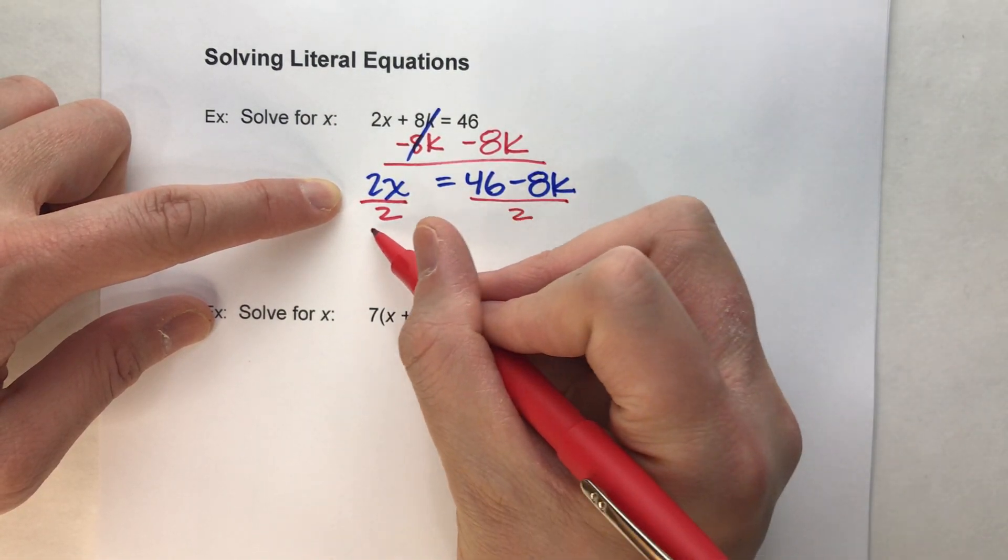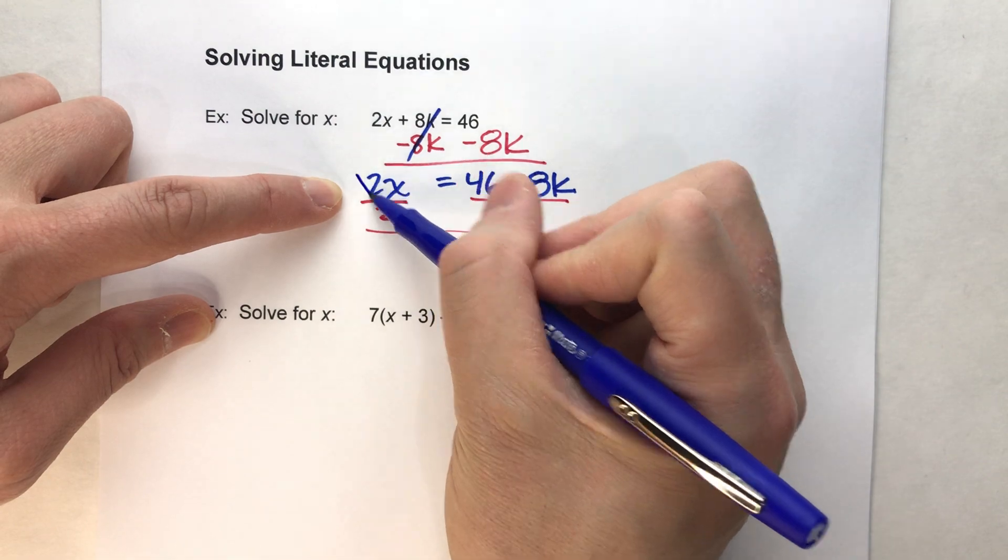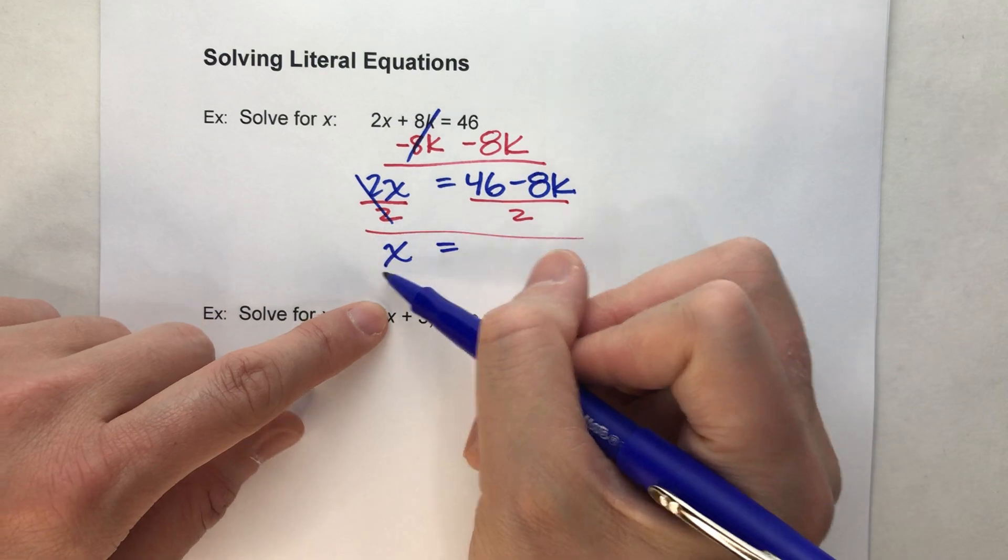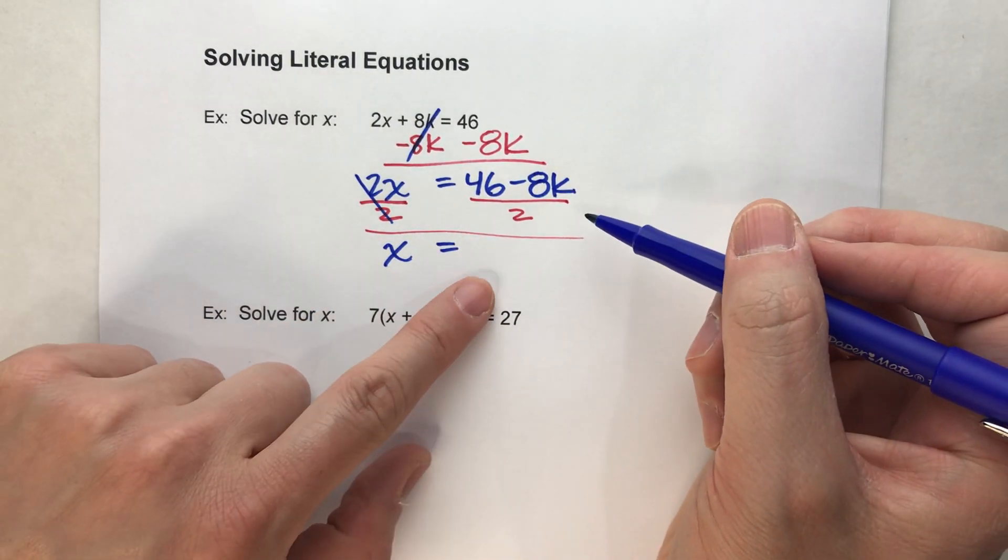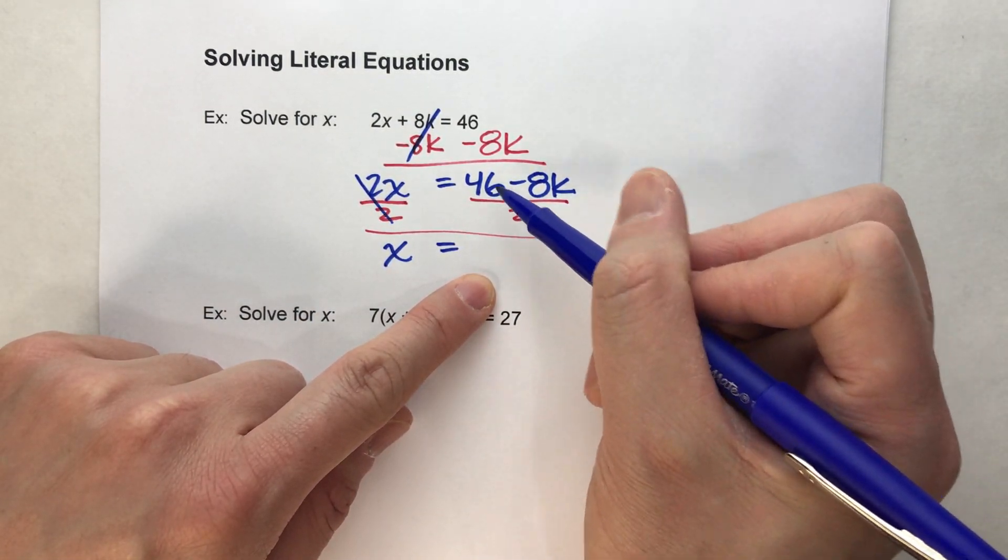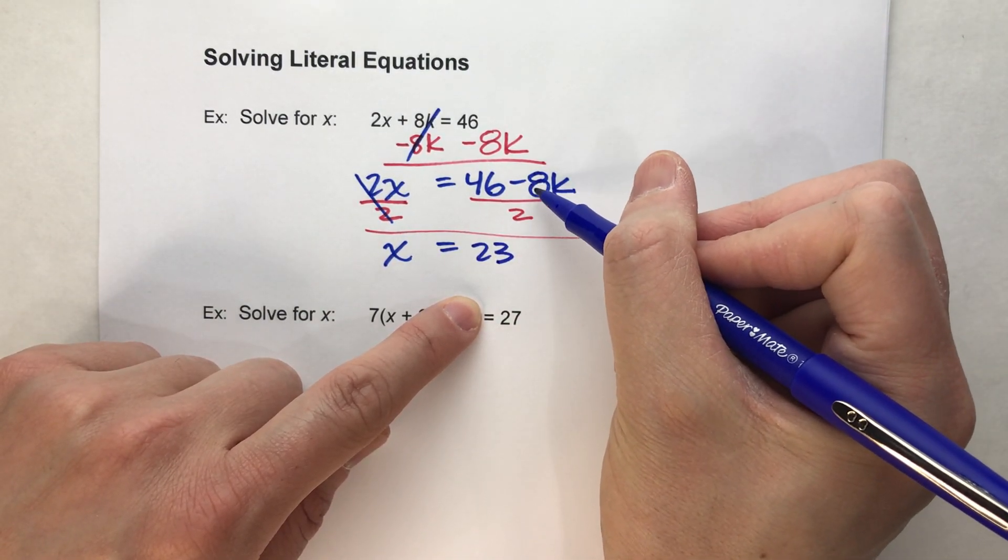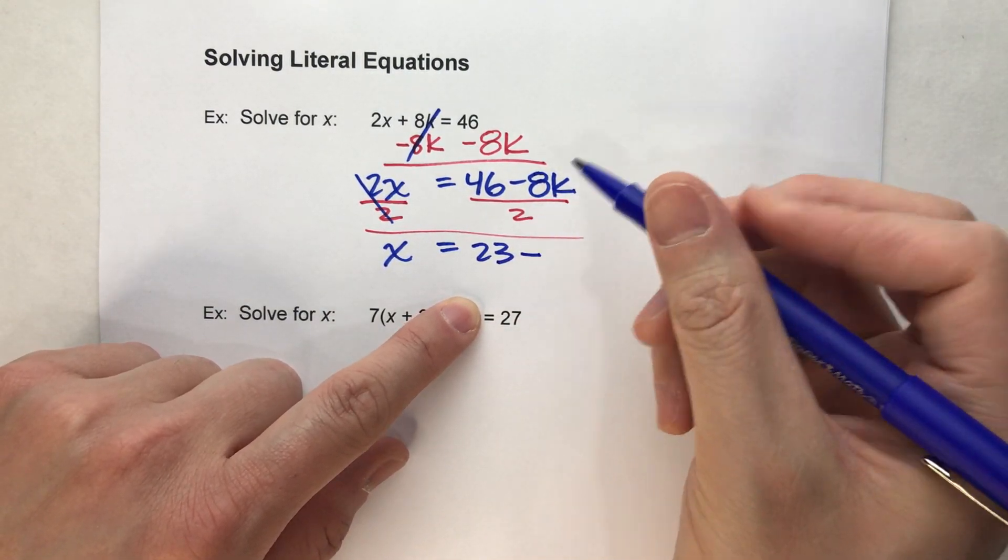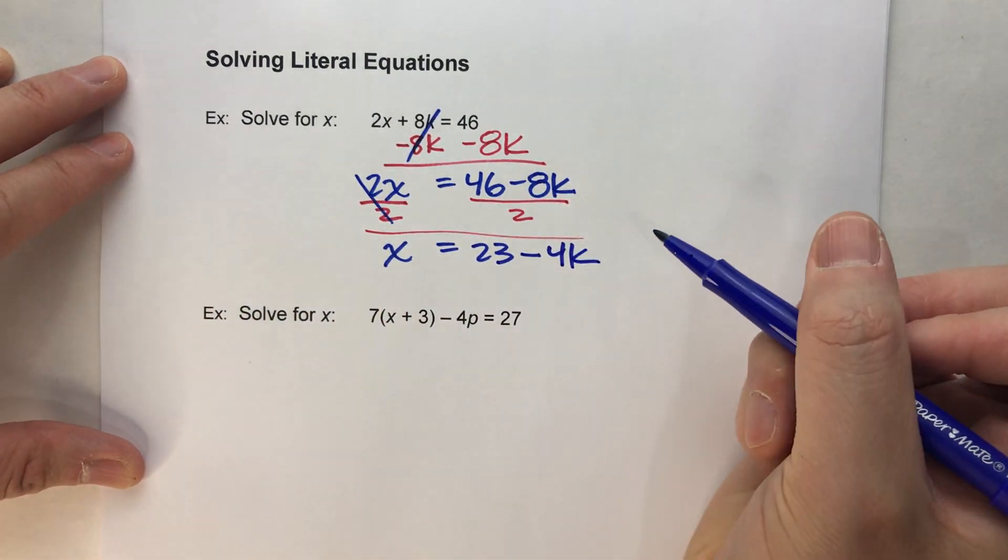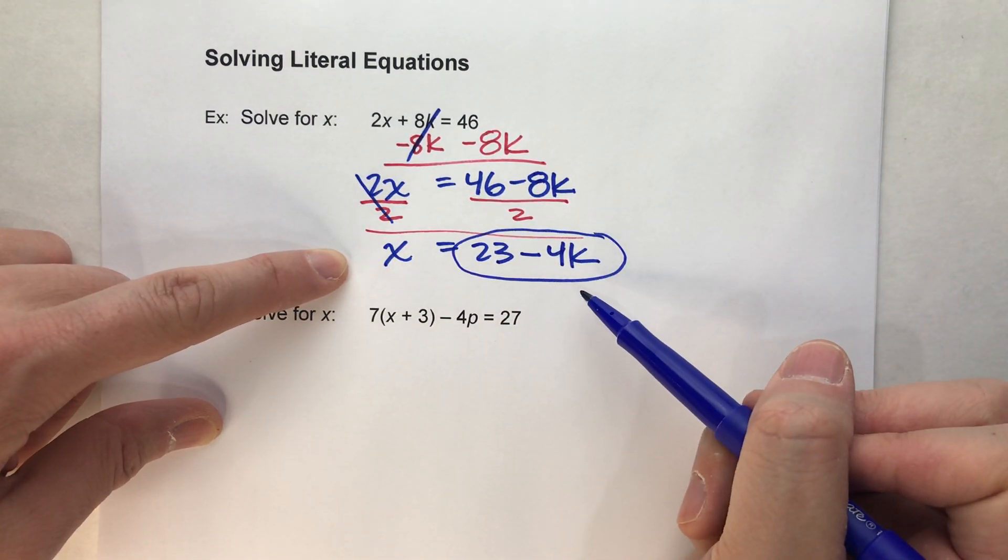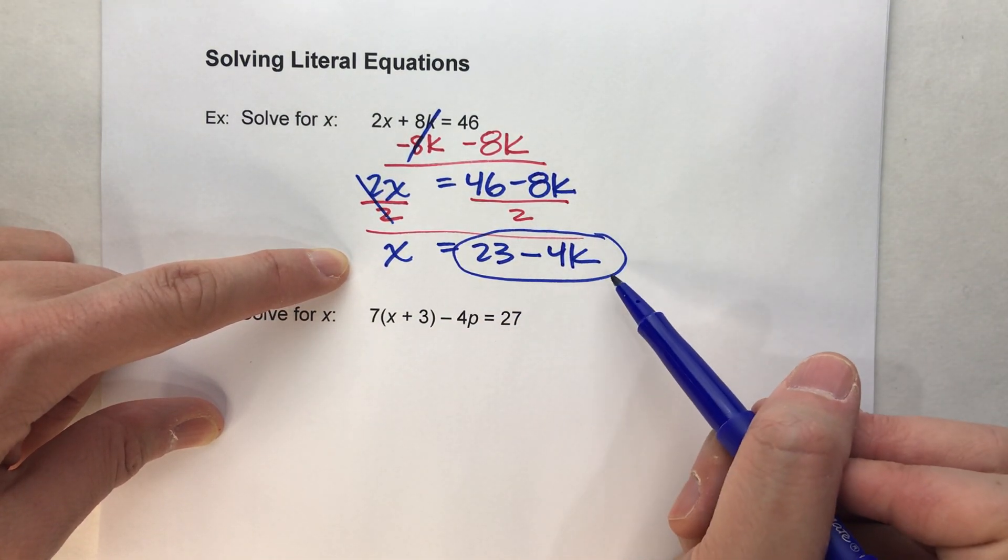So, the 2s undo each other, but the x drops down, the equals drops down, and notice, got x by itself. On the other side, divide everything by 2. 46 divided by 2 is 23, and minus 8k divided by 2 is 4k. And guess what? We just solved for x. This whole thing over here is what x equals, 23 minus 4k.